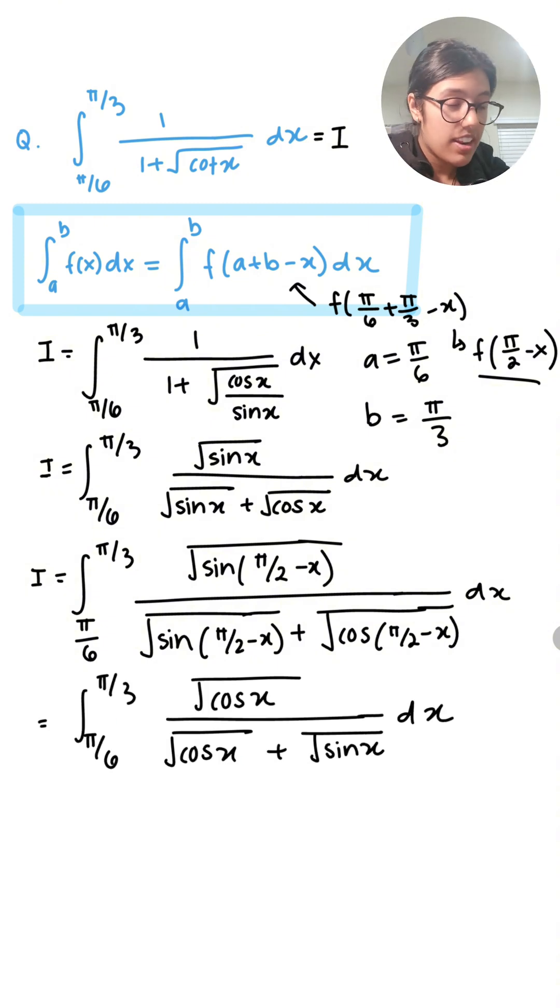Now we're getting really close because this is also equal to I. We can add equation 1 and equation 2, which gives us 2I on the left side.